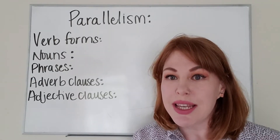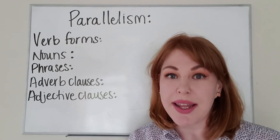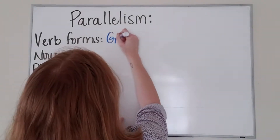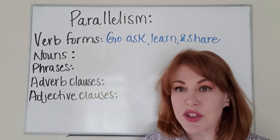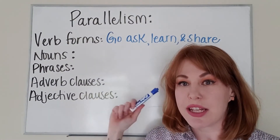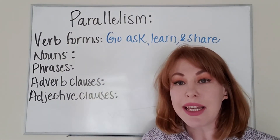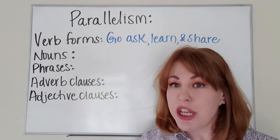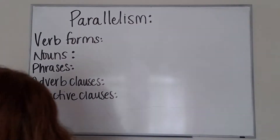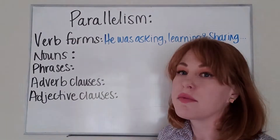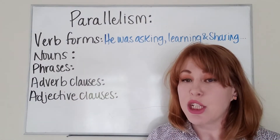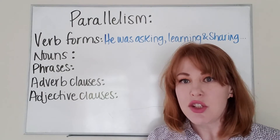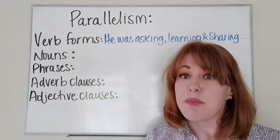Parallelism can be used in many different ways when you're writing. The most common way it is used is in verb forms. In this verb form, 'go, ask, learn, and share' — each verb form is presented in the same way. If I were to change my sentence to 'he was asking, learning, and sharing,' this is still parallelism because each verb form is presented in the same way.